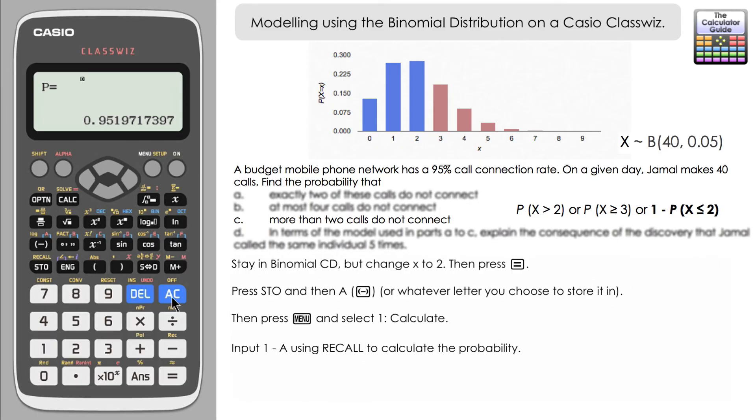So we're going to stick with binomial cumulative distribution, but we're going to change x this time to two. And we'll keep n and p the same. So press equals just to confirm. And here we have the probability in the first instance, remember, this is the probability of it being equal to two or less.